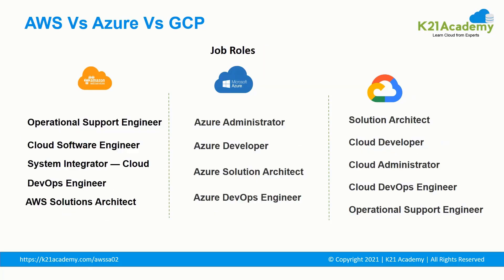There are lots of jobs available for AWS, Azure and GCP professionals. In AWS you can become an Operational Support Engineer, Cloud Software Engineer, System Integrator in Cloud, DevOps Engineer, or AWS Solution Architect. In Azure you can become an Azure Administrator, Azure Developer, Azure Solution Architect, or Azure DevOps Engineer. In GCP you can become a Solution Architect, Cloud Developer, Cloud Administrator, Cloud DevOps Engineer, or Operations Support Engineer. At the end we will also share certification programs for Solution Architecture Certification in AWS, Azure and GCP.